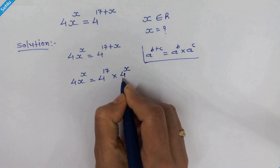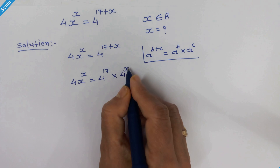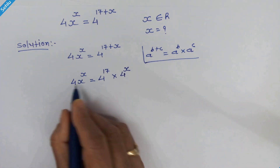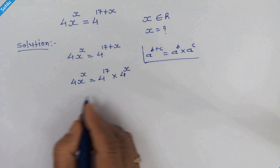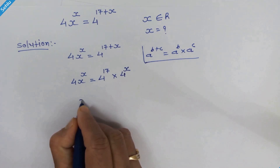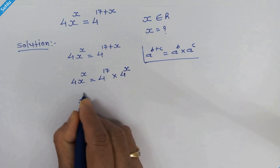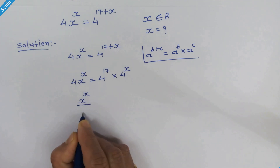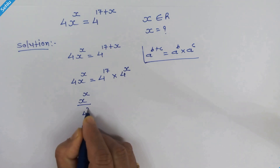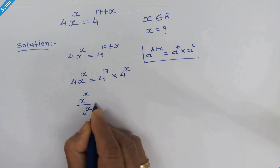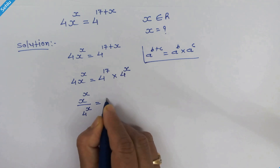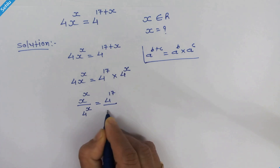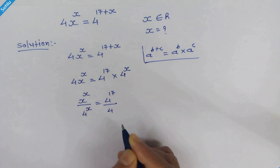Now let's move this 4 raised to x to the left hand side and this 4 to the right hand side. So we have x raised to x upon 4 raised to x is equal to 4 raised to 17 upon 4.